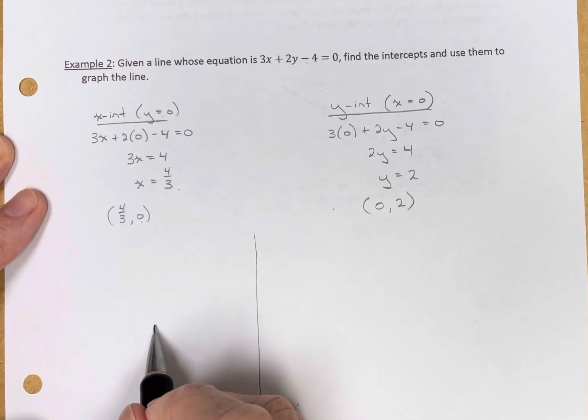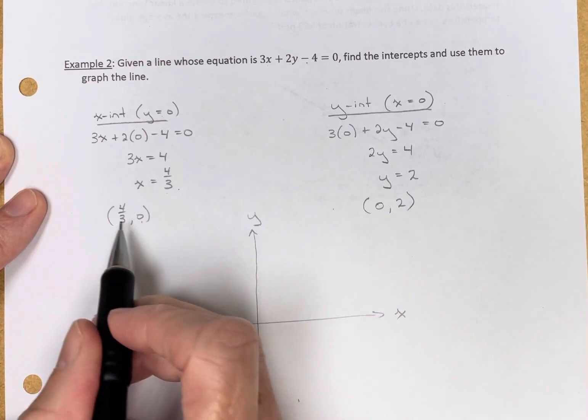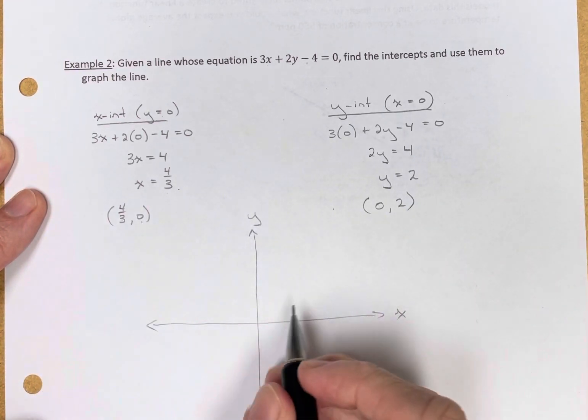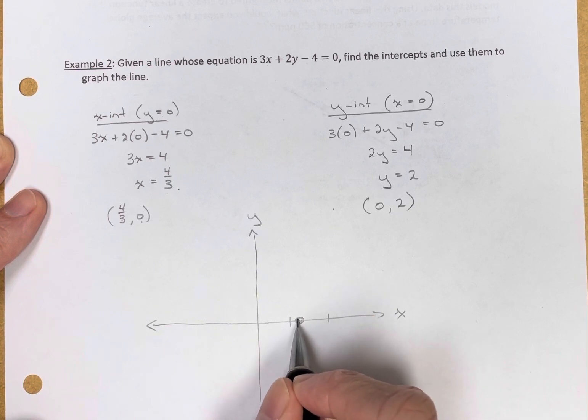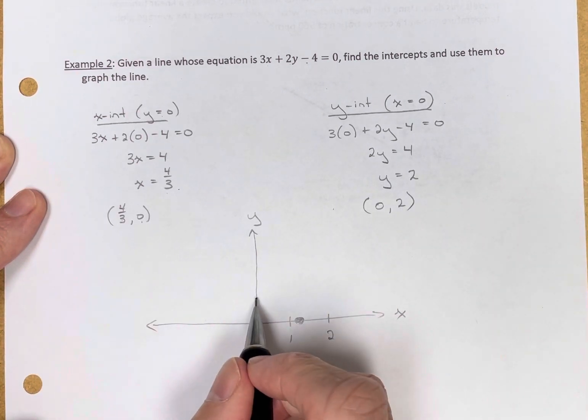Very quick to graph. Once I draw my axes, x-intercept is 4 thirds, 0, so 1, 2. That's approximately here. That's 4 thirds, 1 and a third, give or take. y-intercept is 2, so 1, 2. That's right here.